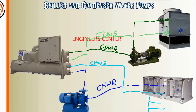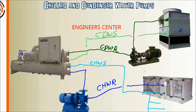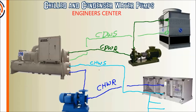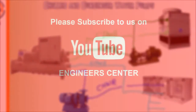Now there might be some questions — well, how do you know the difference between the supply and the return? Well, this is how you need to look at it. If we're talking about chilled water here, chilled water supply means you're providing, you're supplying chilled water, so that's actually going to come from the chiller, because the chiller is what's supplying the cold chilled water.